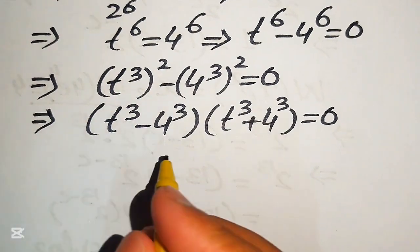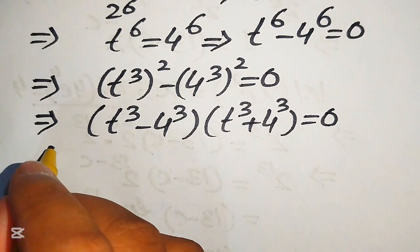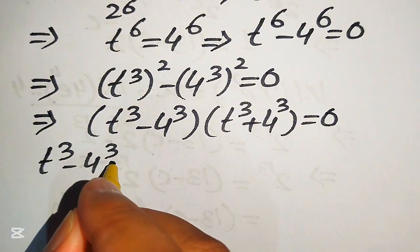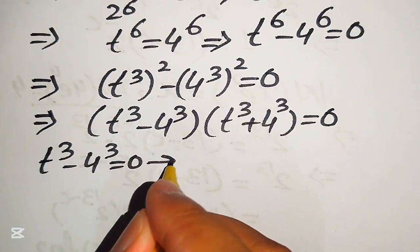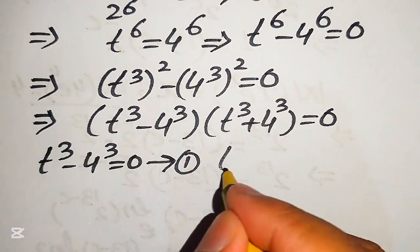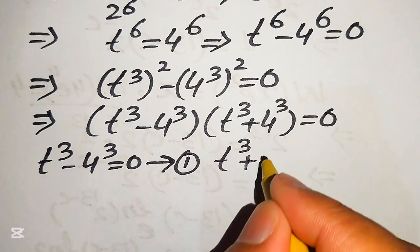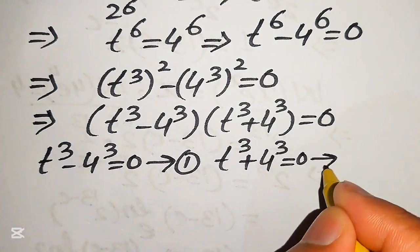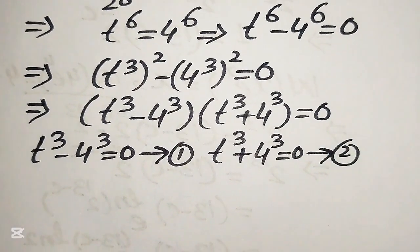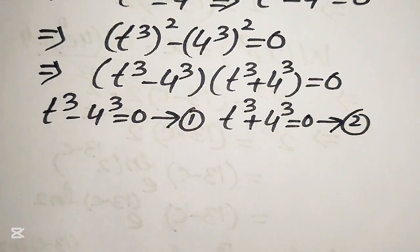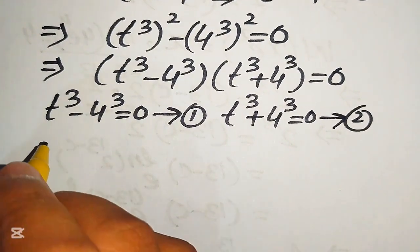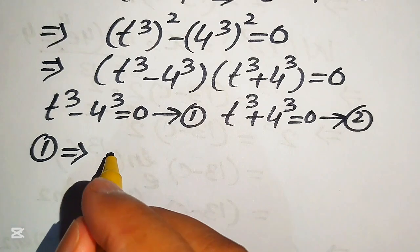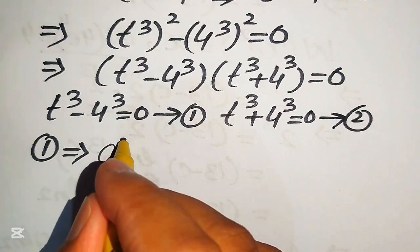We divide this into two cases. The first case is t³ minus 4³ equals 0, which we call equation number 1. The second case is t³ plus 4³ equals 0, which we call equation number 2. We now focus on equation number 1, where we apply the cubic difference formula.